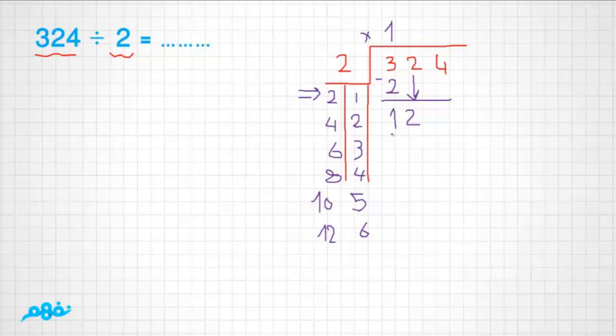We have to see which number multiplied with two gives us twelve or smaller than twelve. You can see that six times two is twelve.